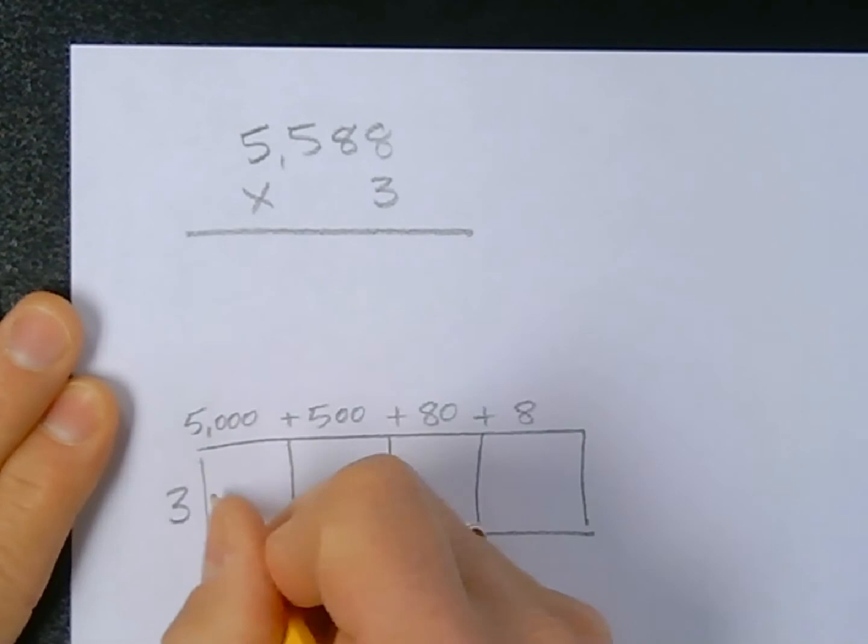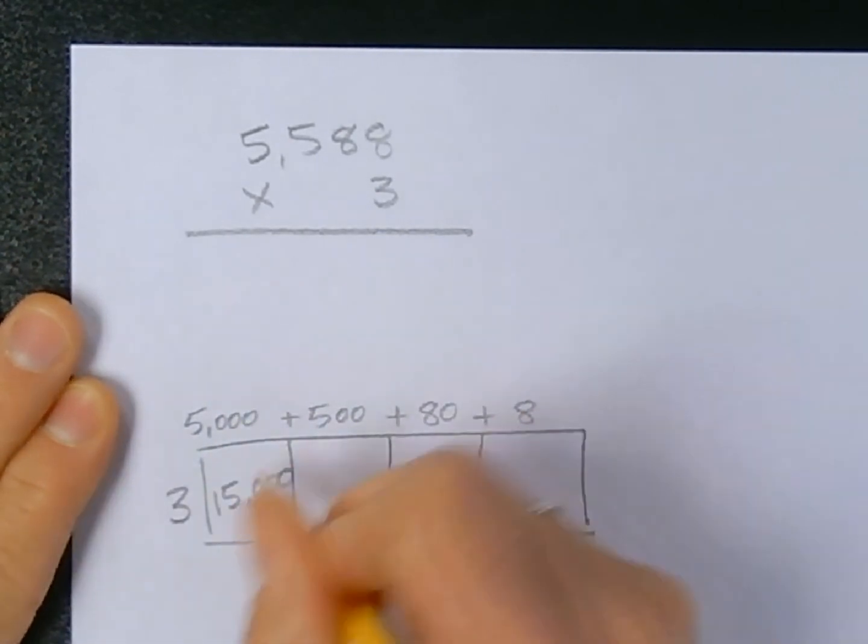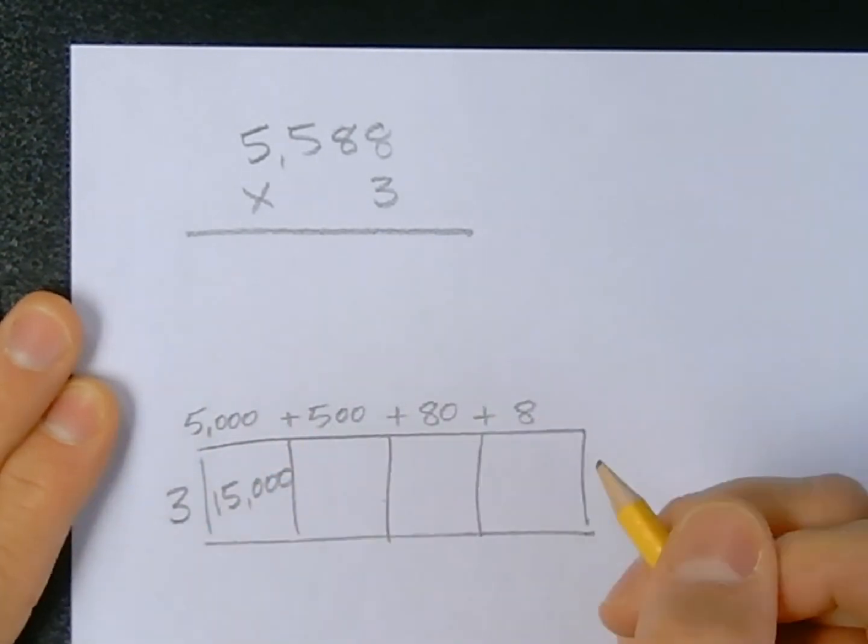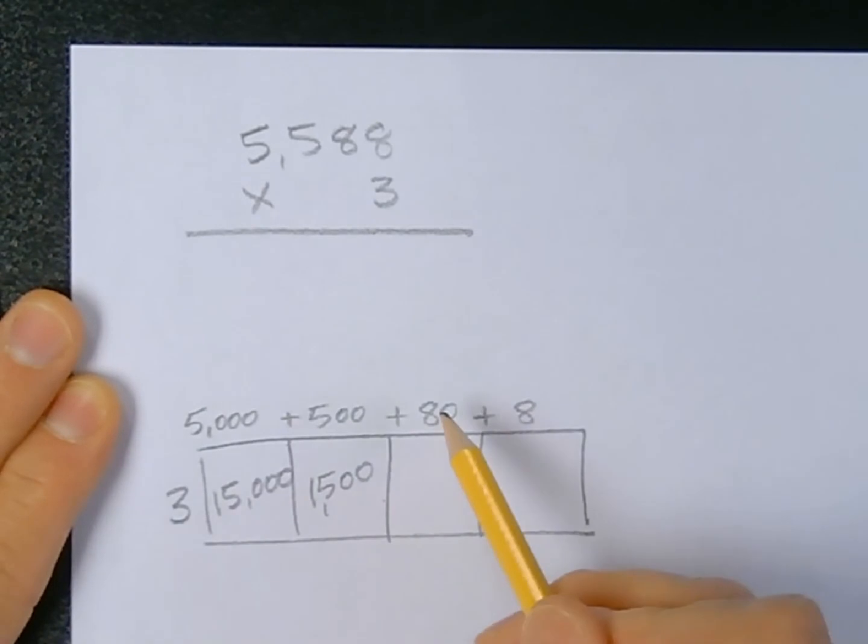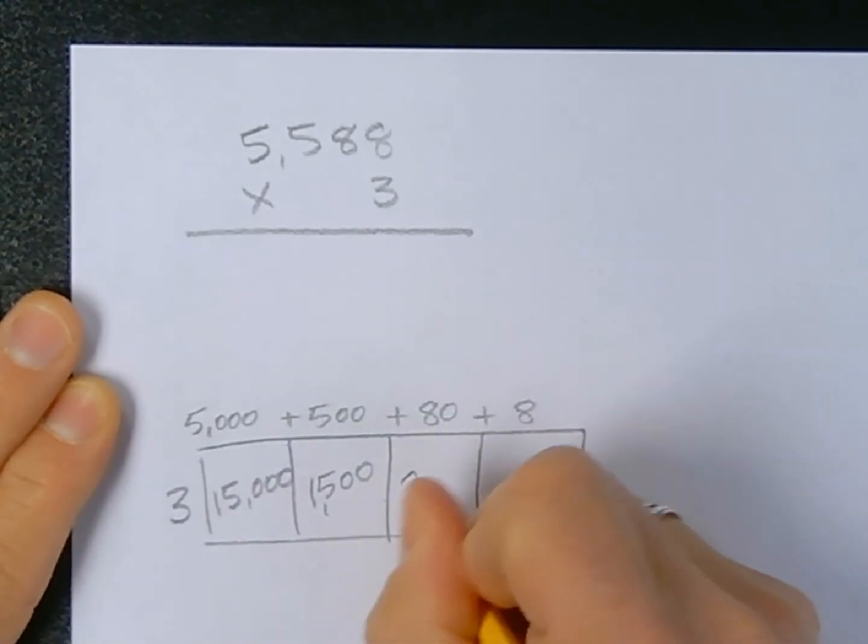5 times 3 is 15, so that gives me 15 with 3 zeros for 15,000. 3 times 500 is going to give me 1,500, or 15 with 2 zeros. 8 times 3 is 24, so 8 tens times 3 is going to be 24 tens.